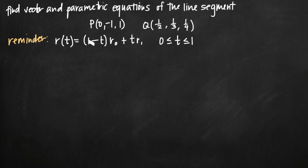Now as a reminder, I've written the formula that we use to find the line segment. This is going to give us the vector equation of the line segment, which joins the tip of one vector, which we'll say is r₀, to the tip of the other vector, which we'll say is r₁.